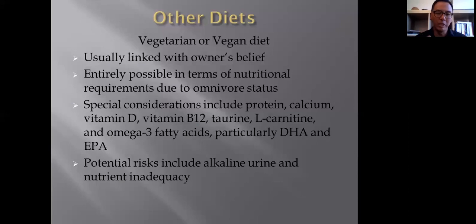Special considerations when you want to put them on a vegetarian or vegan diet would be similar to people who are vegetarian or vegan. Includes protein, calcium, vitamin D, vitamin B12, taurine, L-carnitine, omega-3 fatty acids, particularly DHAs and EPAs, because these are usually found in meat. And a potential risk does include alkaline urine and nutrient inadequacy. If you're not very sure what you're doing, that can cause all sorts of weird symptoms and signs.